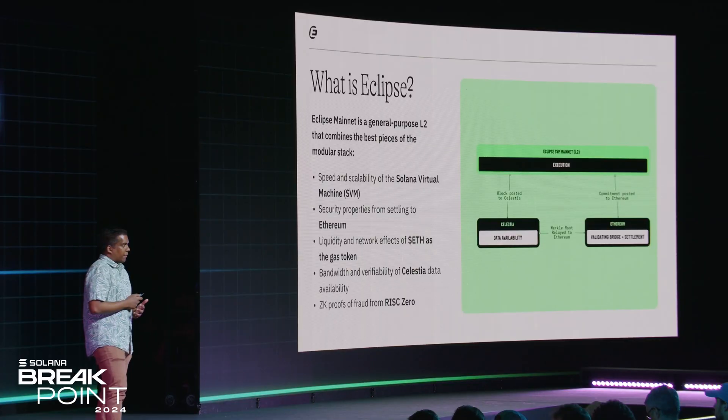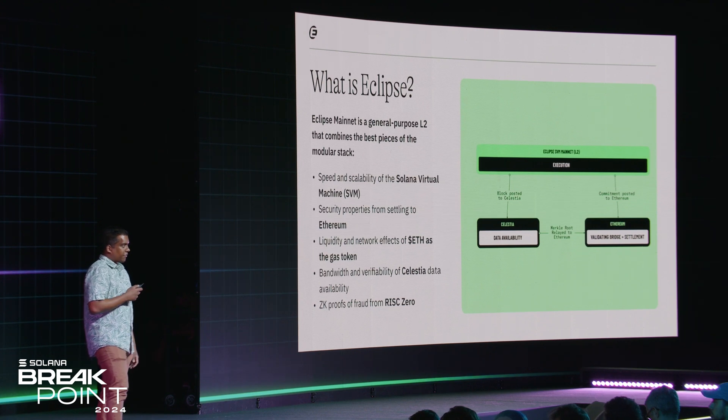Eclipse, uniquely as an L2, can do something that the L1 can't, which is really lean into high-throughput and aim for a very high TPS. That's what we intend on doing, especially with the latest developments from FireDancer. Eclipse inherits the security of Ethereum, so we can focus on the qualities of liveness and censorship resistance and really lean into what makes Eclipse unique as an L2.